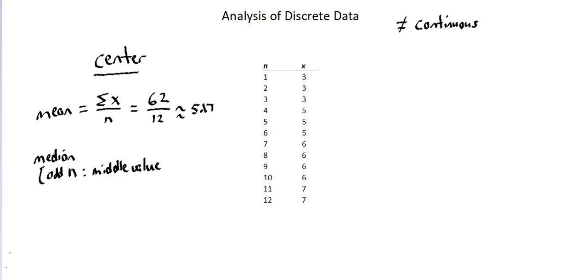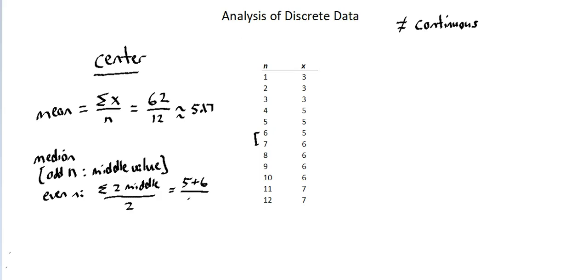That is not our case. In our case we have an even n. So the way we address an even n is we sum the two middle points and divide by two. In our case, the two middle points — positions six and seven — have values five plus six divided by two. Eleven divided by two is 5.5. The median of this data set is 5.5. In a data set with an odd number of data points, you simply take the middle data point as your median.